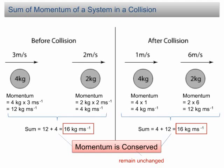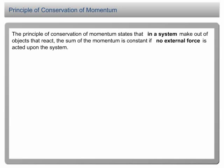The sum of momentum before the collision is equal to the sum of momentum after the collision. This is the physics concept we are going to discuss: the principle of conservation of momentum. It states that in a system made up of objects that react, the sum of momentum is constant if no external force acts upon the system. The reactions can be collisions or explosions.